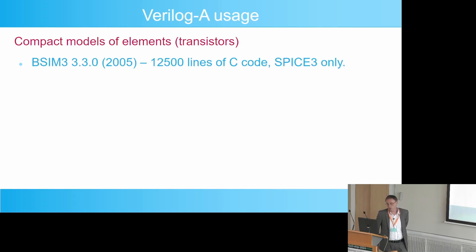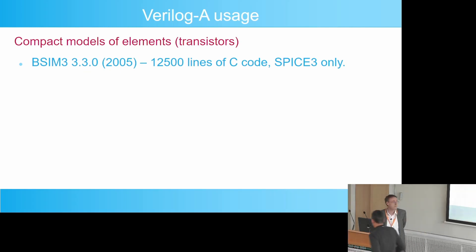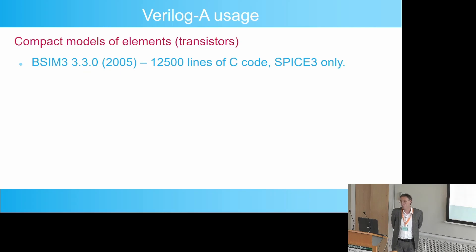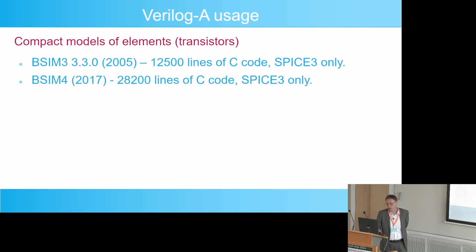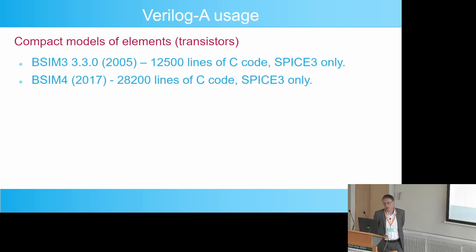If we go through some history to see what advantages we get with Verilog A: you're probably familiar with the BCM3 model, whose last version was released in 2005. At that time, models were being released in the form of C code — usually C code that can be directly attached to the SPICE 3 simulator. BCM3 comprised over 12,000 lines of C code. The next version, BCM3+, was also released as C code and comprised more than twice as many lines.